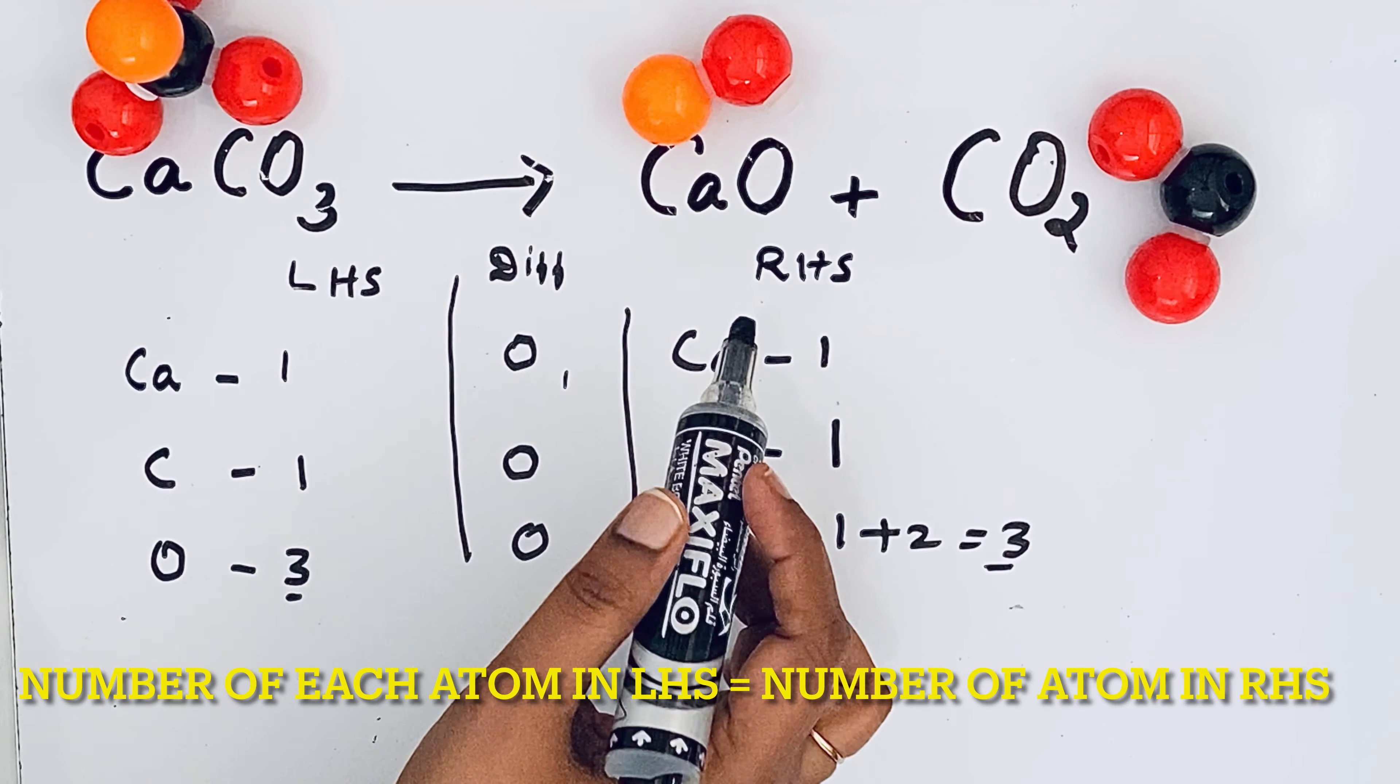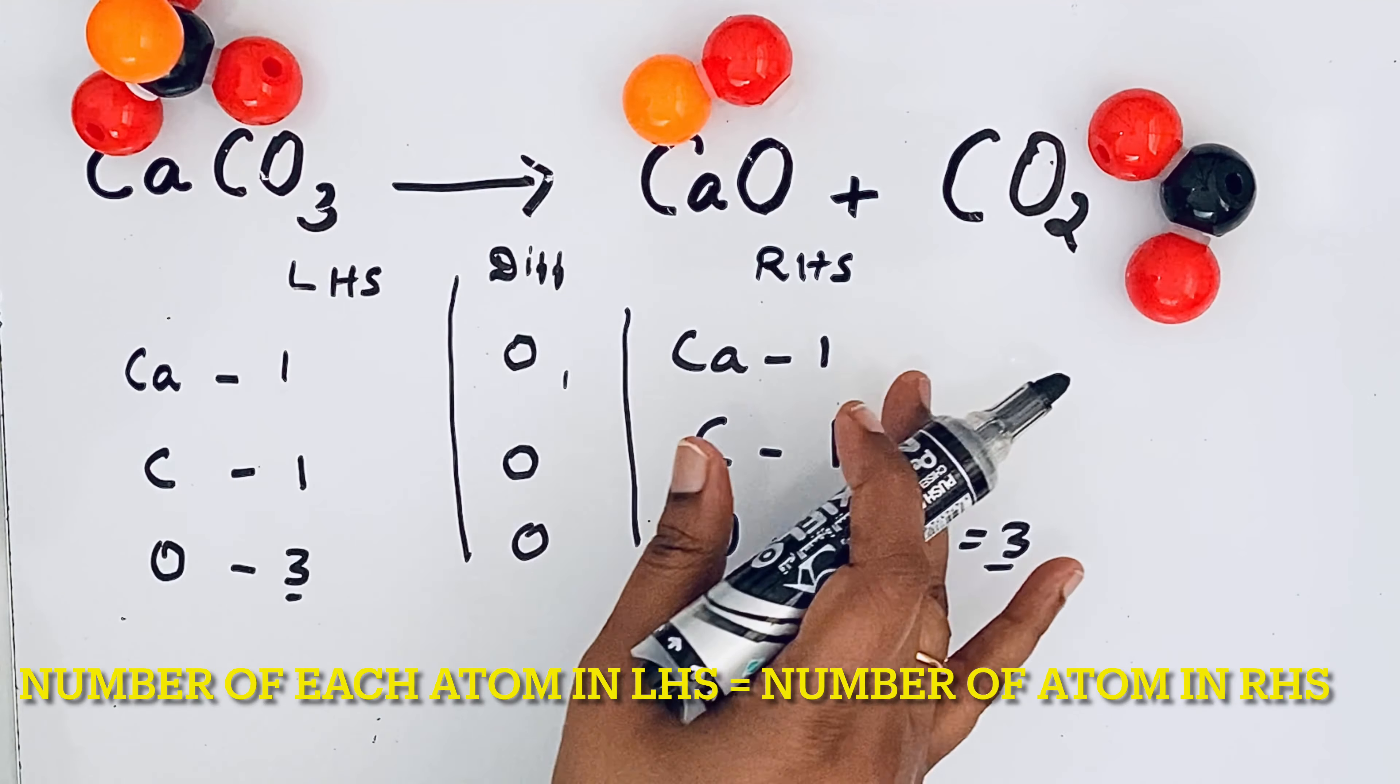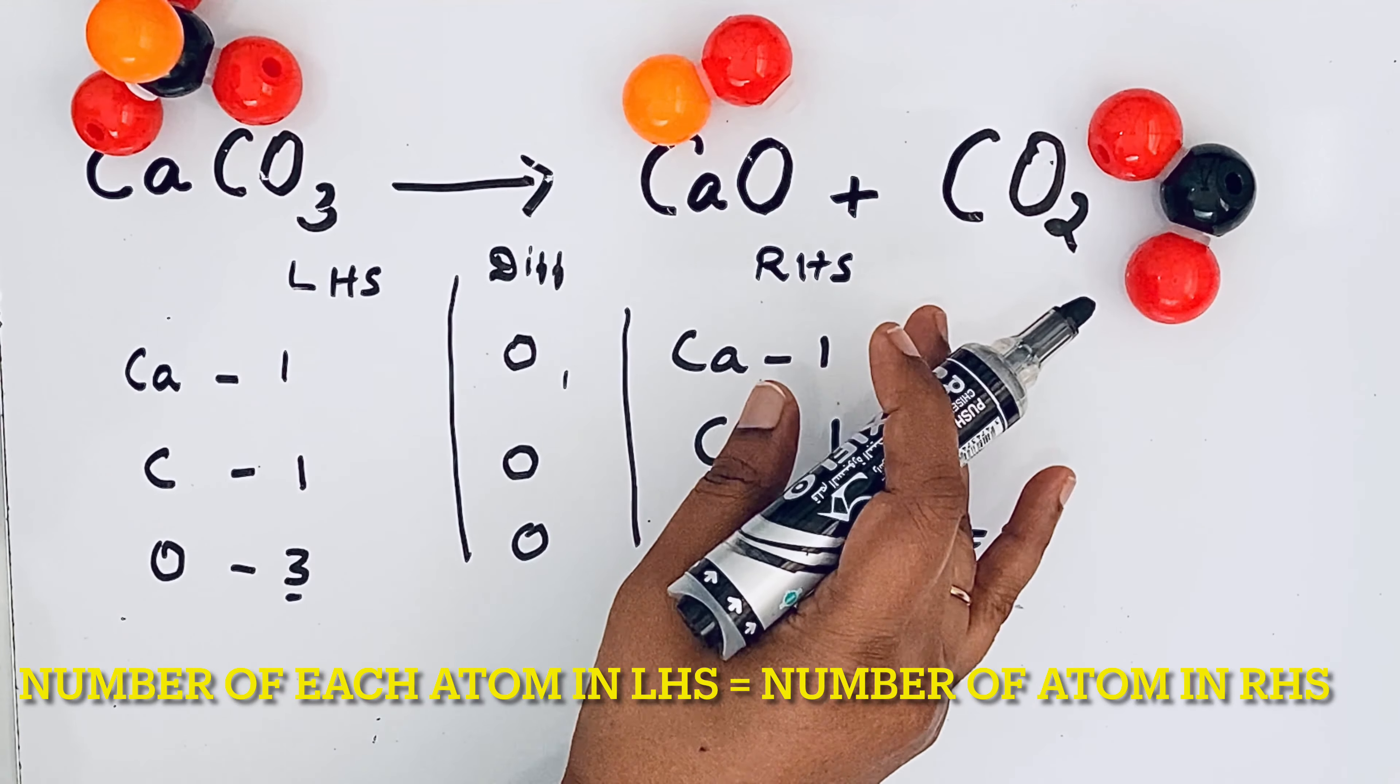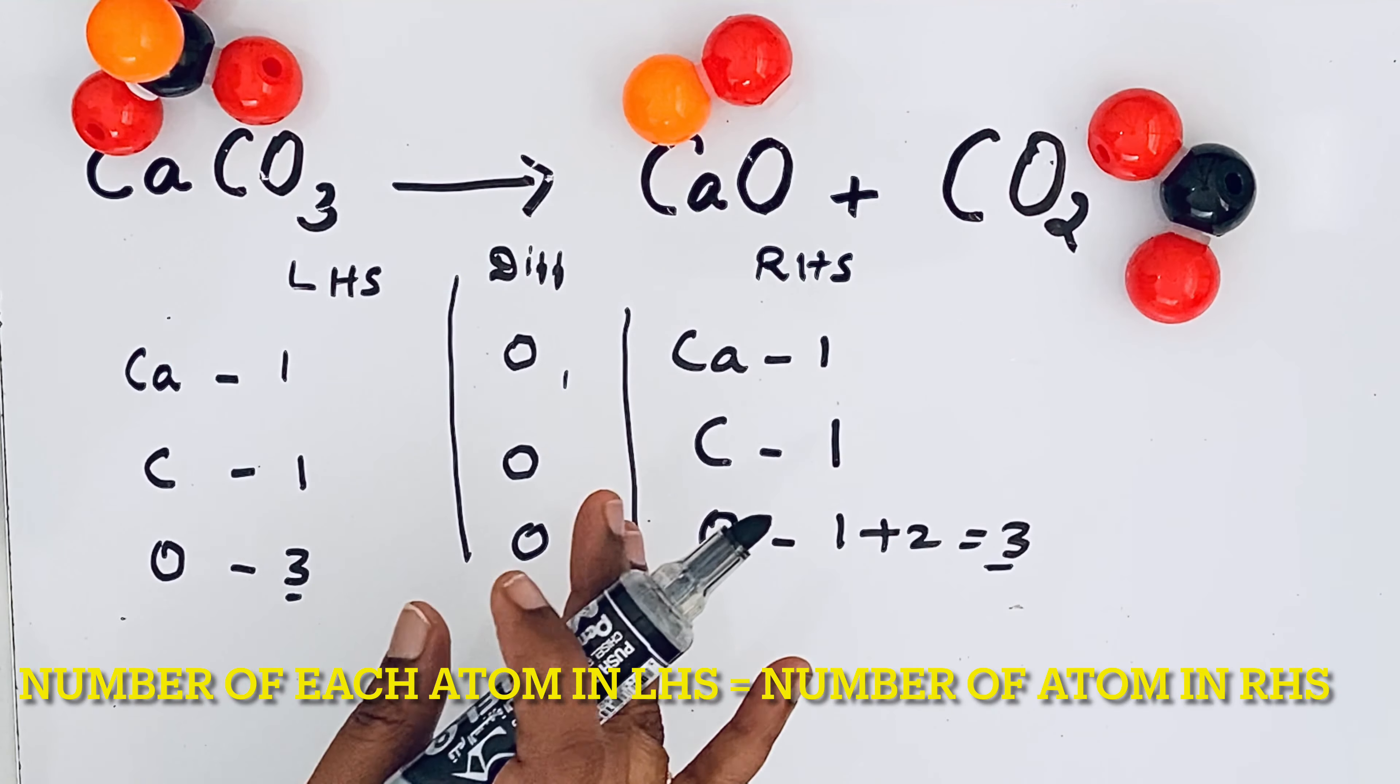So according to the law of conservation, number of reactants should be equal to number of products. From the reactants we may get completely different products but the number of reactants should be equal to the number of products.